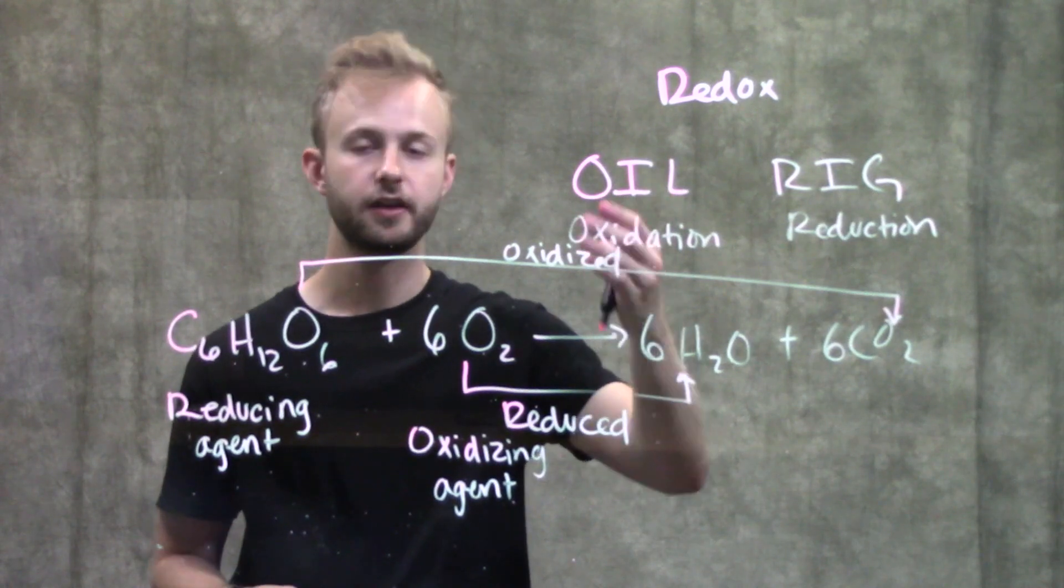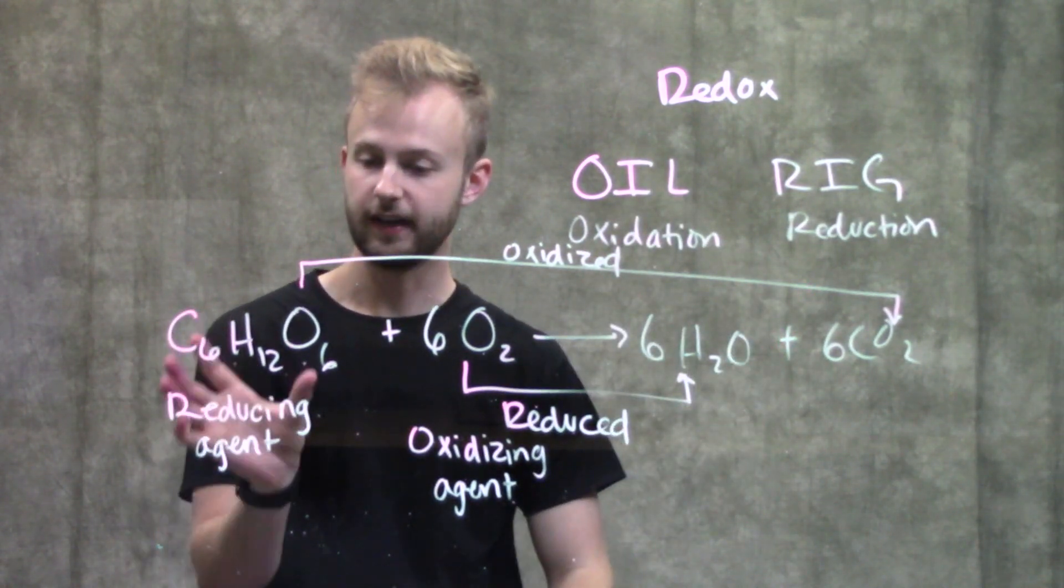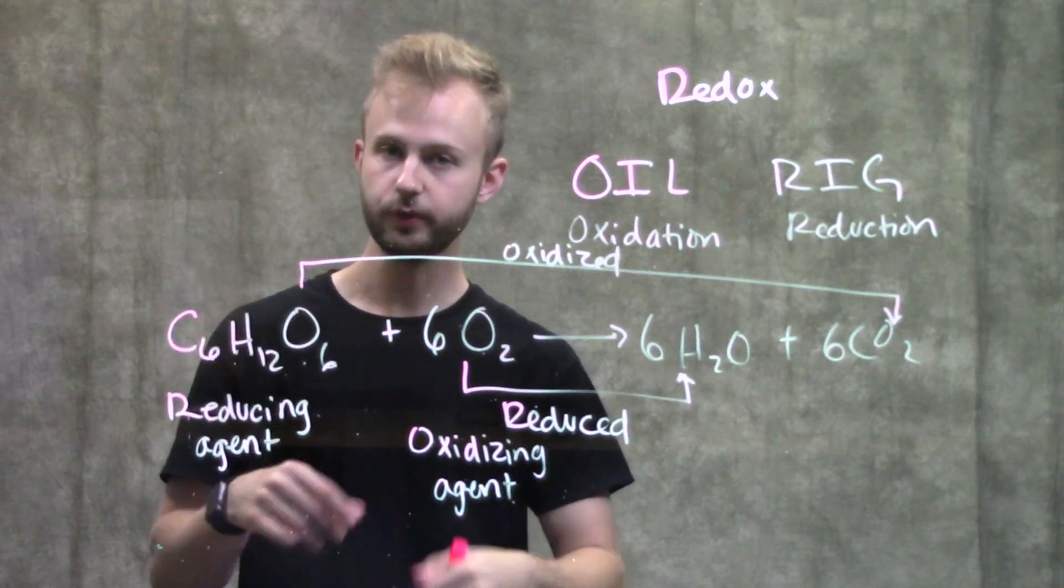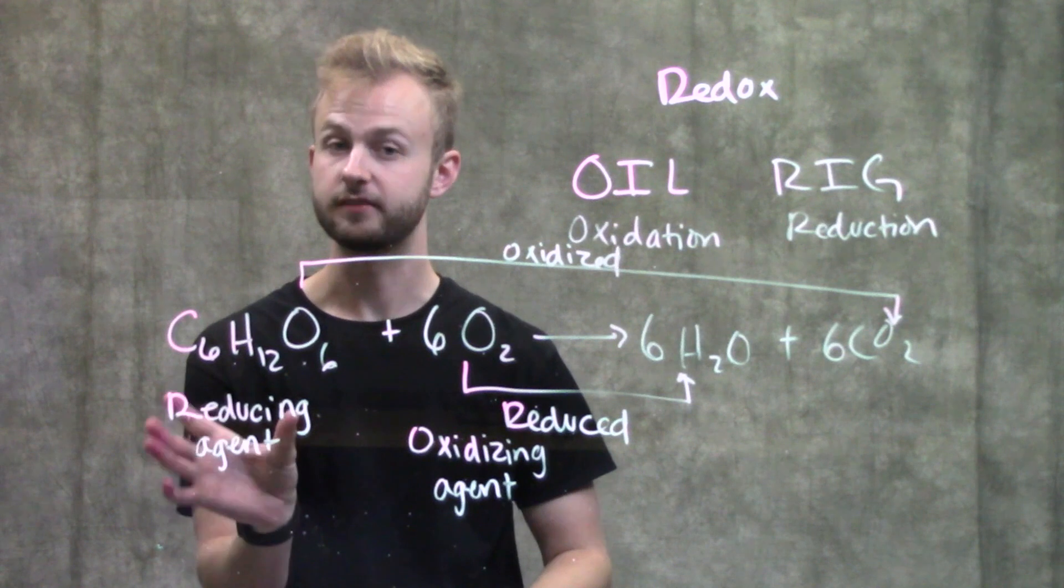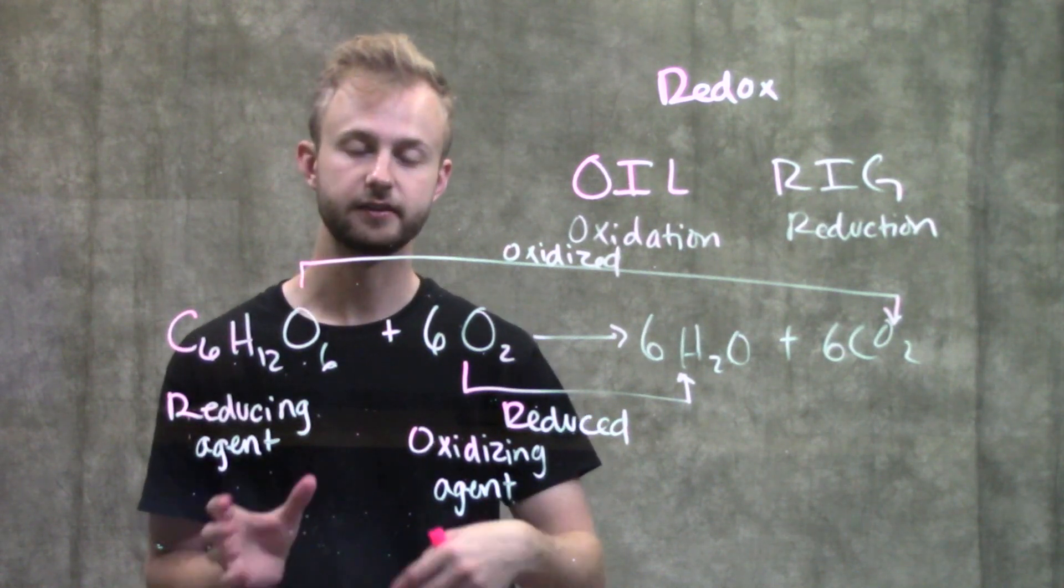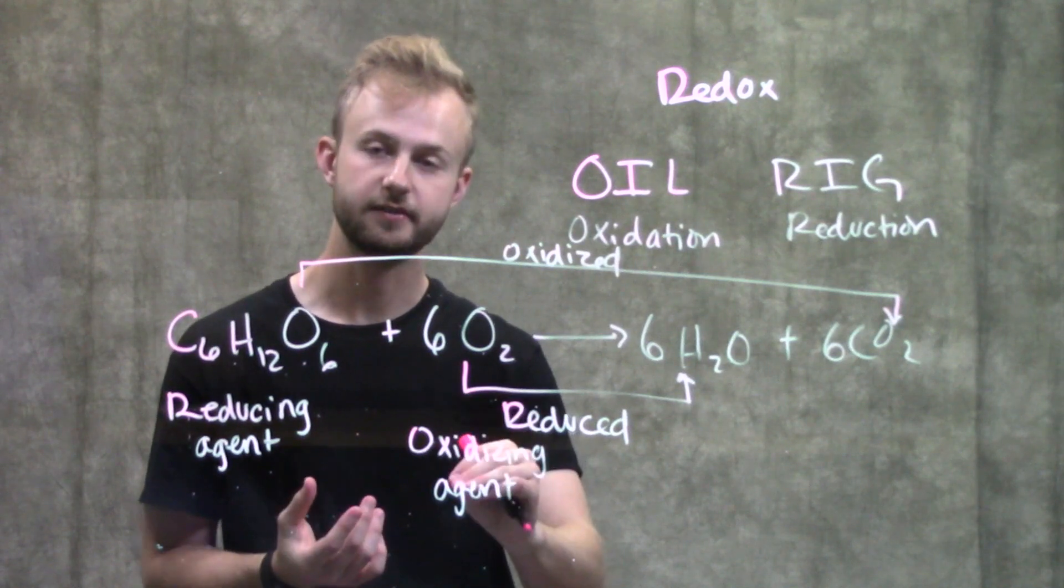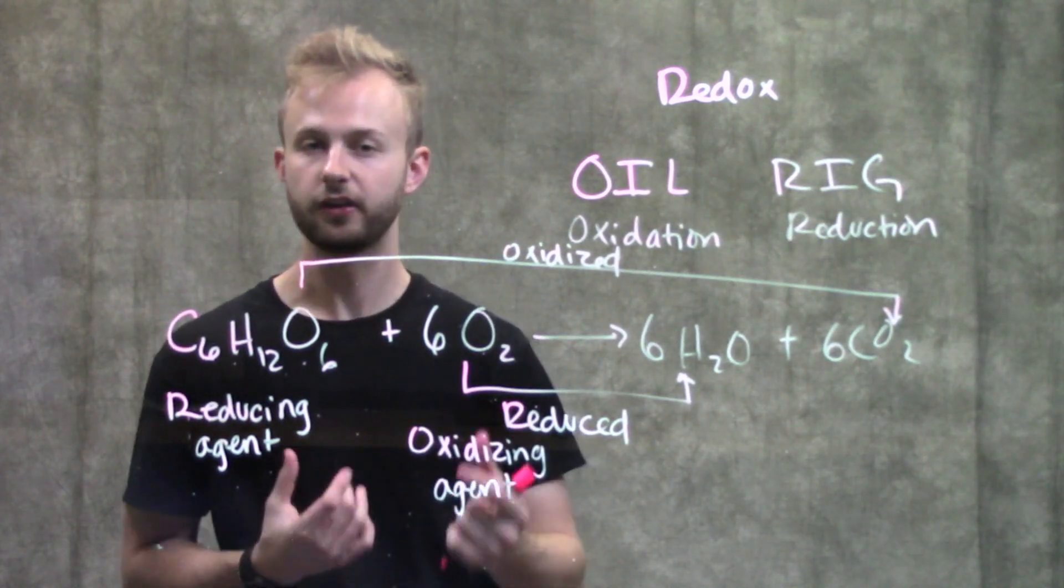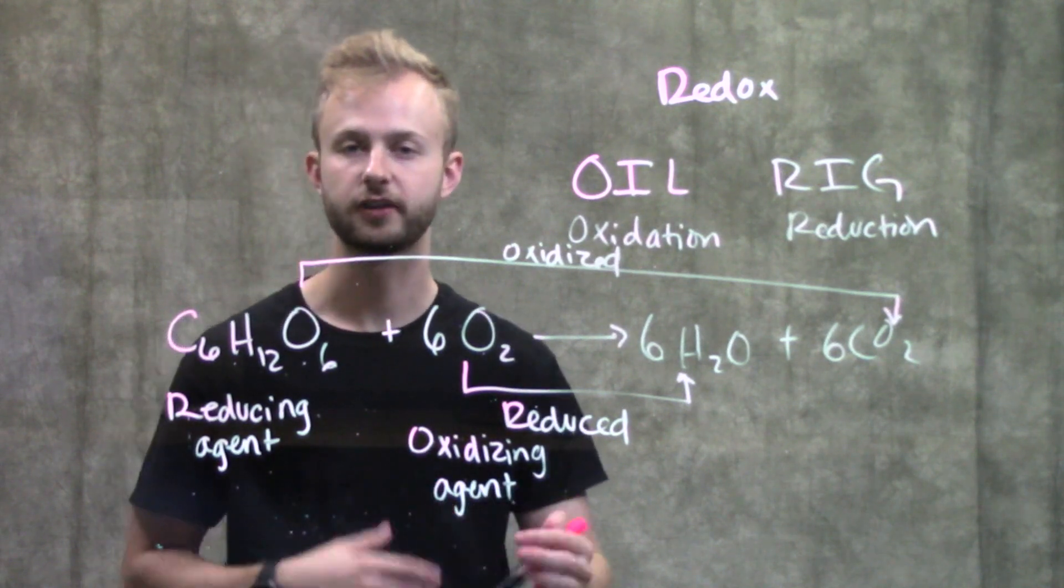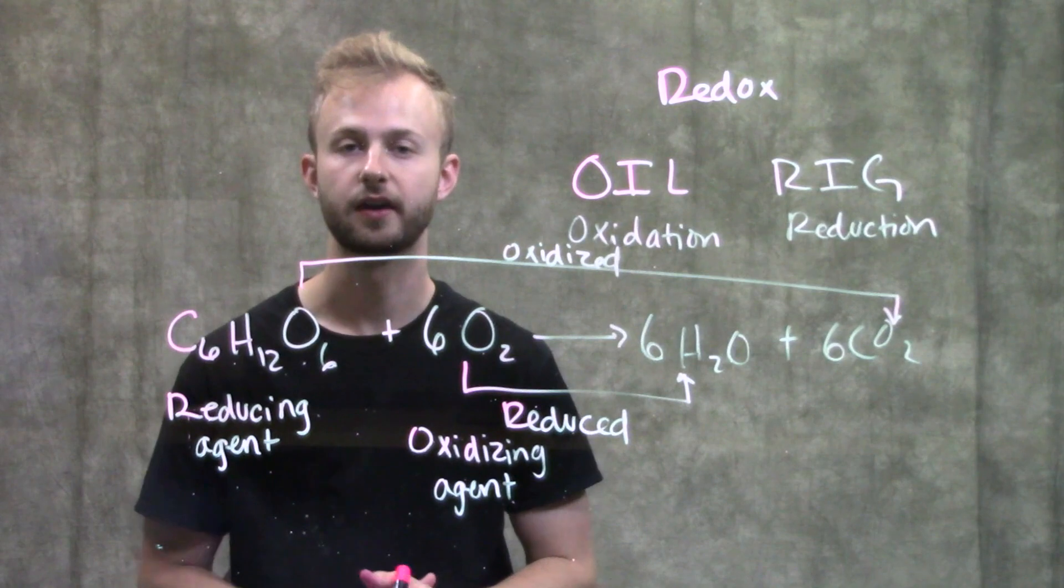To review: oxidation is losing electrons, reduction is gaining electrons. The thing doing the reducing is the reducing agent, which gets oxidized itself. The thing causing something else to become oxidized is the oxidizing agent, but the oxidizing agent gets reduced. It's a little confusing, but work with it to keep these definitions straight, and then it should be pretty straightforward.